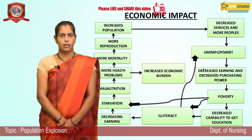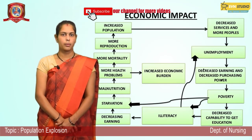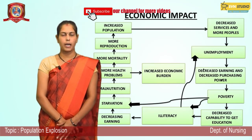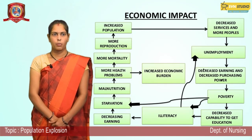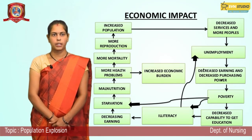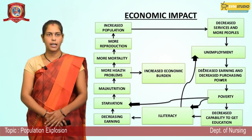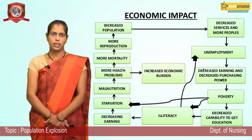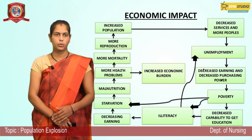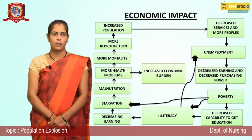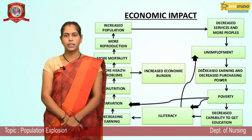Anemia and more health problems result from lack of nutrition. More reproduction also contributes to population growth, which brings us to population control.